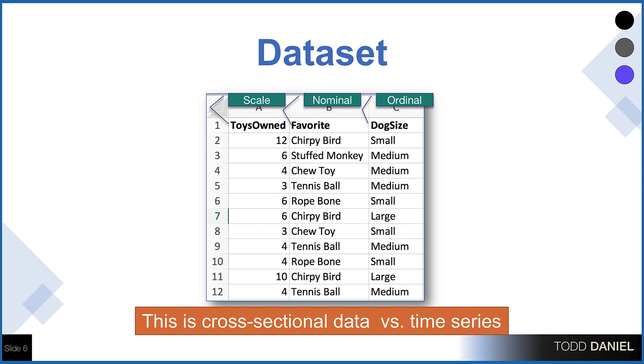Because these data were collected in a survey that was conducted on 50 dogs at about the same time, this is cross-sectional data. If we were to measure these same dogs again in three months and ask them follow-up questions from the survey, that would be time series data.